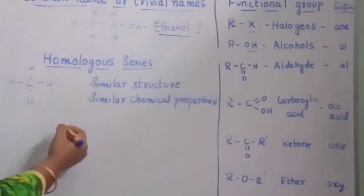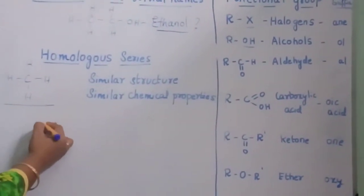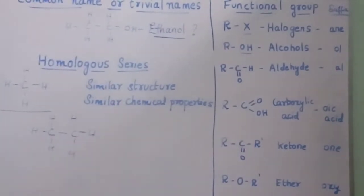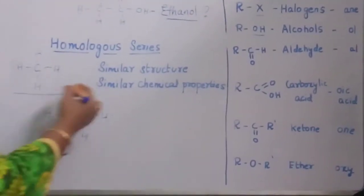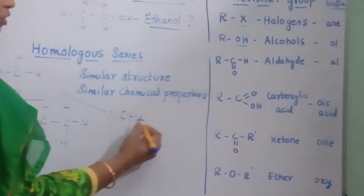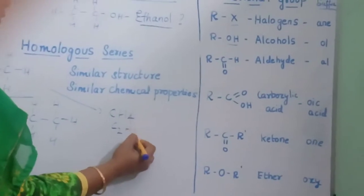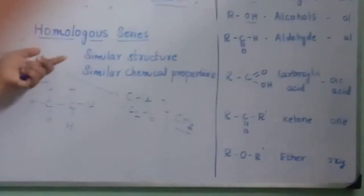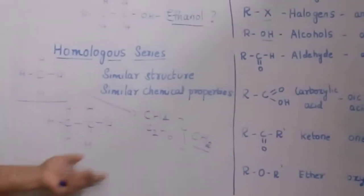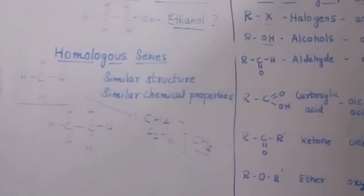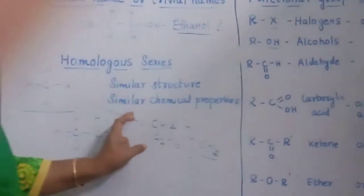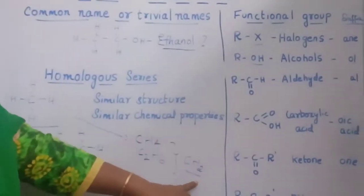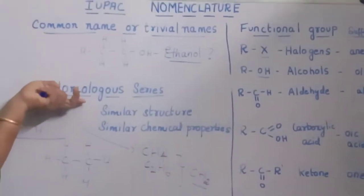Let me take the second compound, ethane — that is C2H6, with two carbons and six hydrogens. When we compare the structure between methane and ethane, the formula for methane is CH4 and for ethane is C2H6. The difference between these two is a CH2 group. Homologous series means compounds which have a similar structure, and the successive compound differs from the previous only by a CH2 group. Such compounds are called a homologous series.